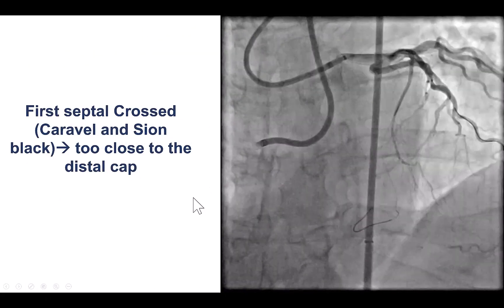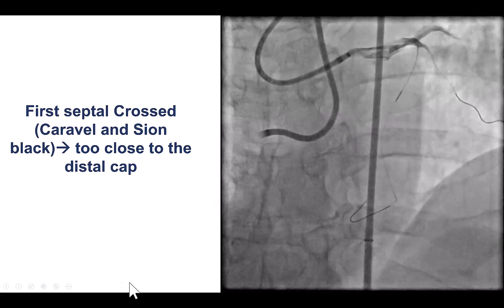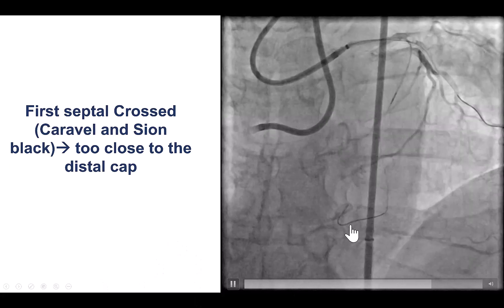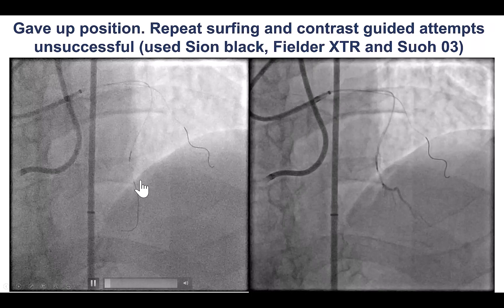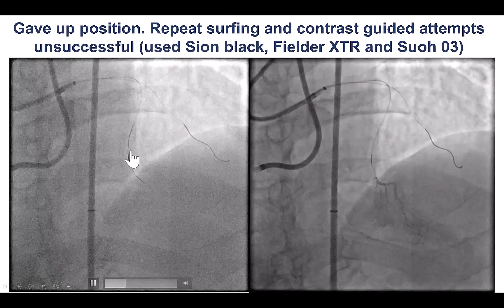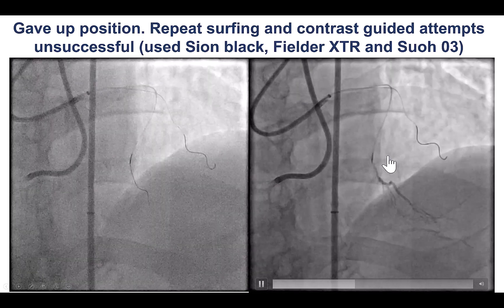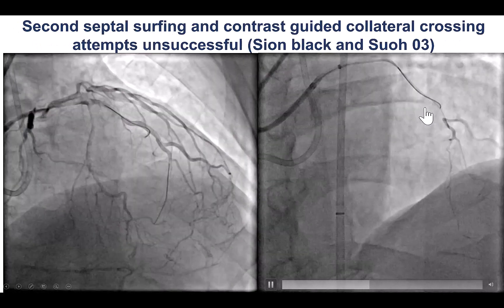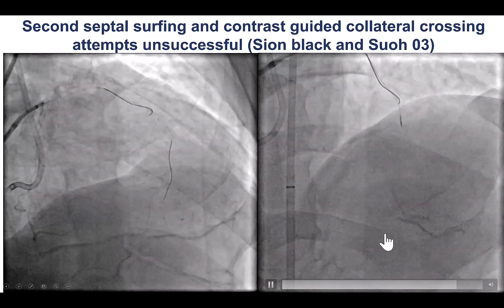We started the retrograde approach and very quickly were able to cross with the Sion Black, but the connection point to the PDA was quite close to the distal cap. We were not satisfied with the location and decided to try to find another septal. We did surfing of several septal collaterals, unfortunately without success, and then surfing of the second septal collateral, but also failed to make the connection.